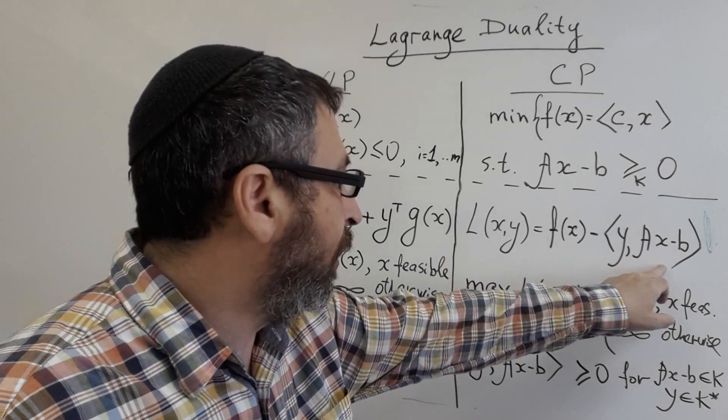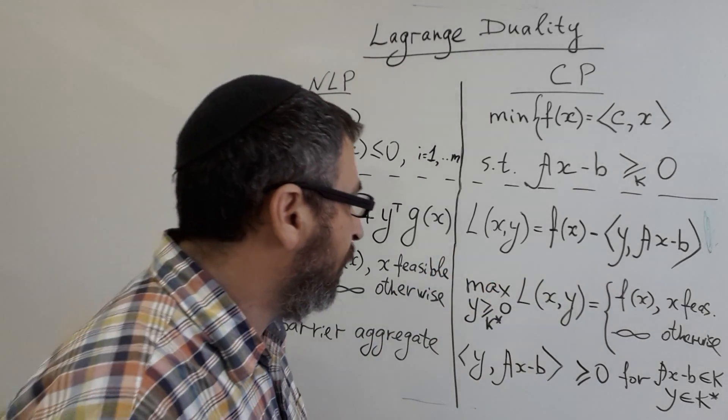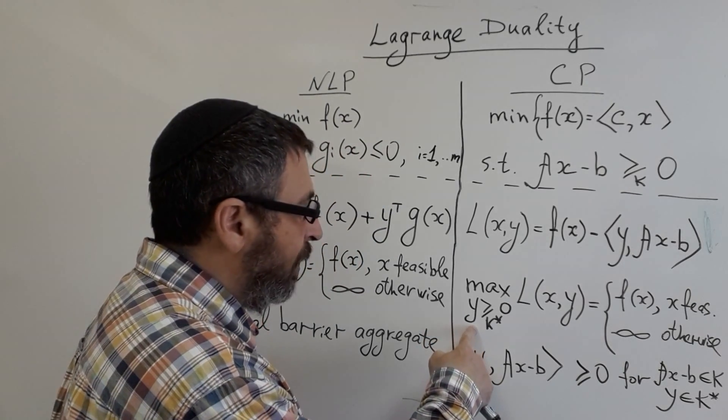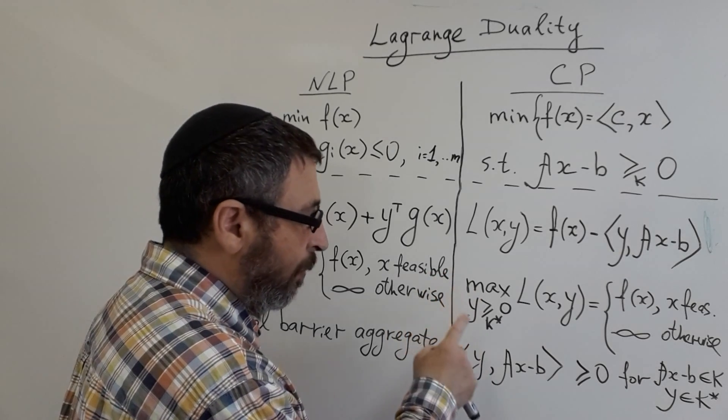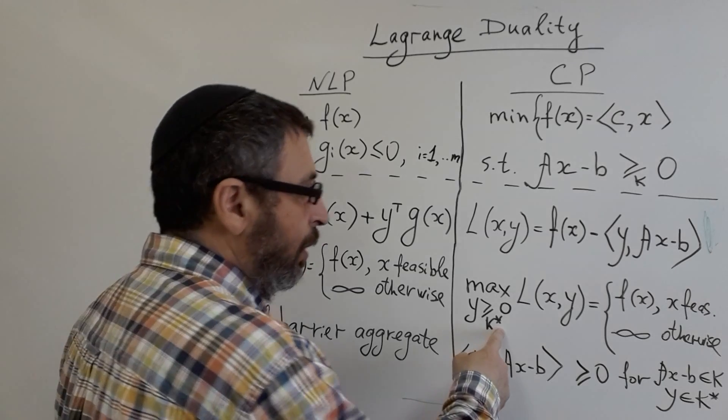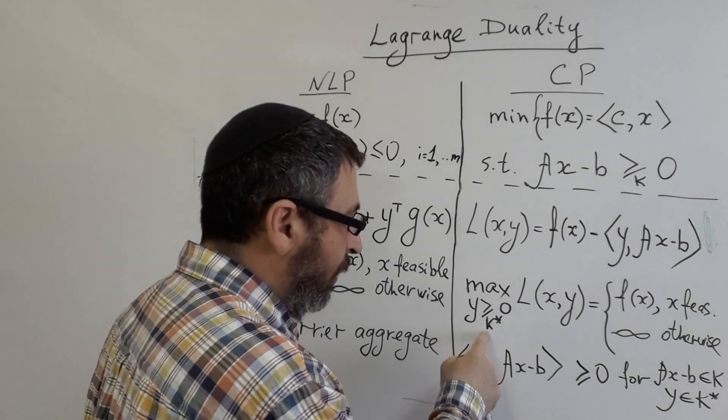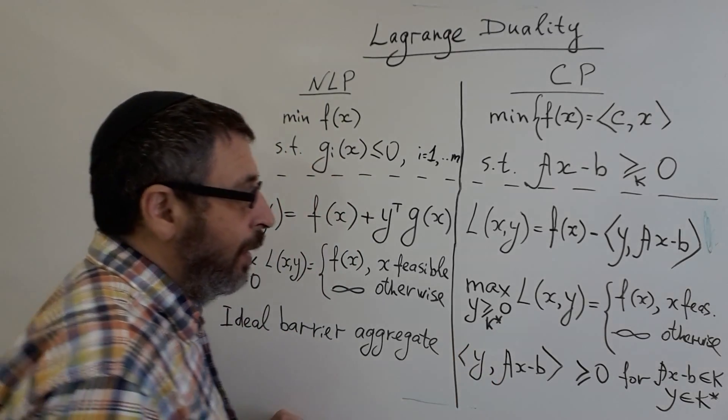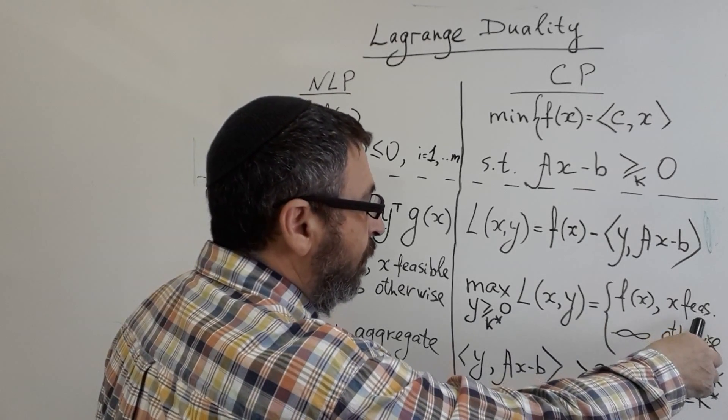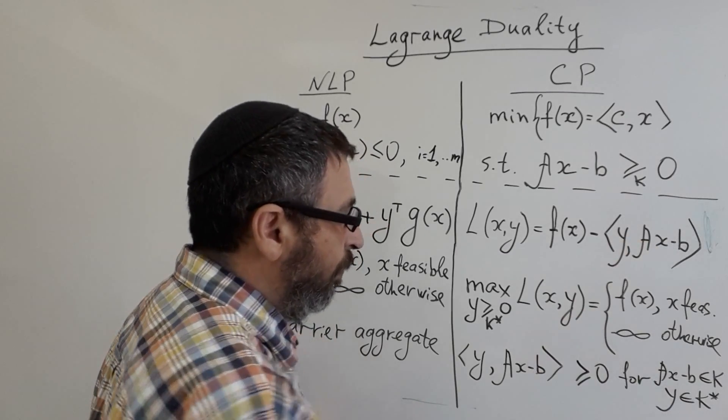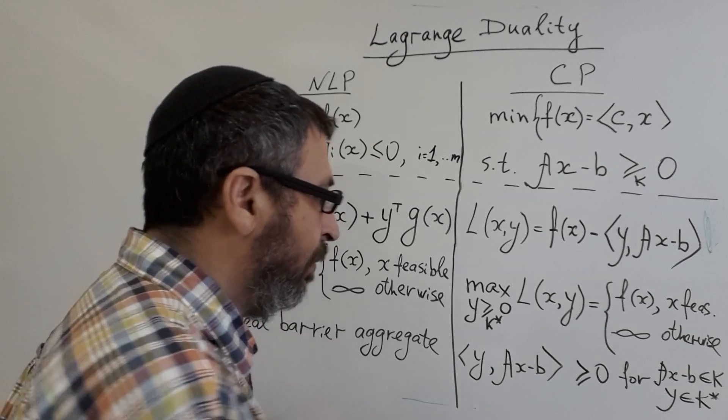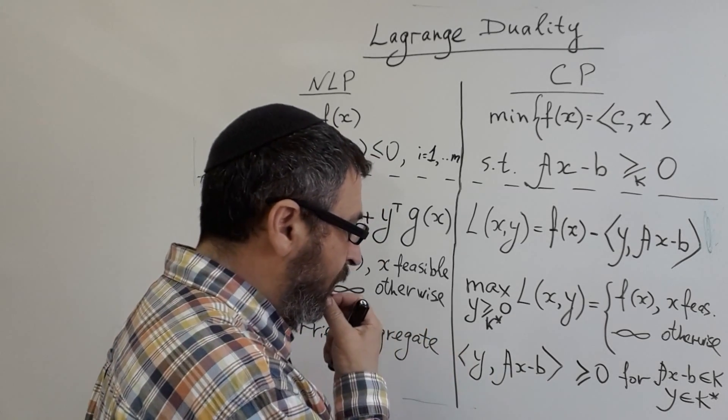First of all, like we told, we have Lagrangian. Let's see what happens if we maximize Lagrangian over feasible multipliers. Feasible multipliers are vectors belonging to dual cone K star. And the claim is very similar: if X is feasible then maximum will be F, and if X is infeasible the maximum will be infinity.